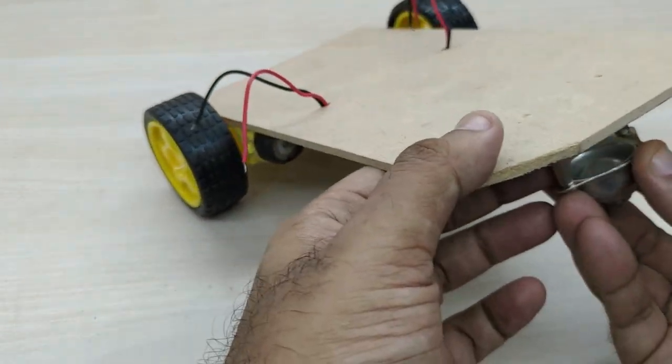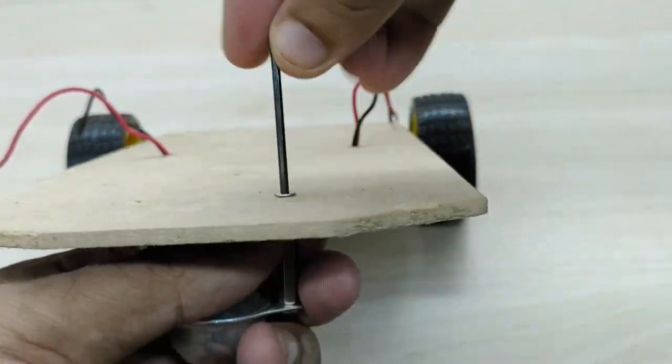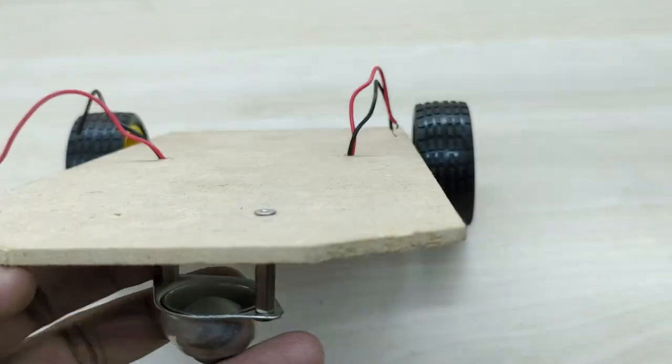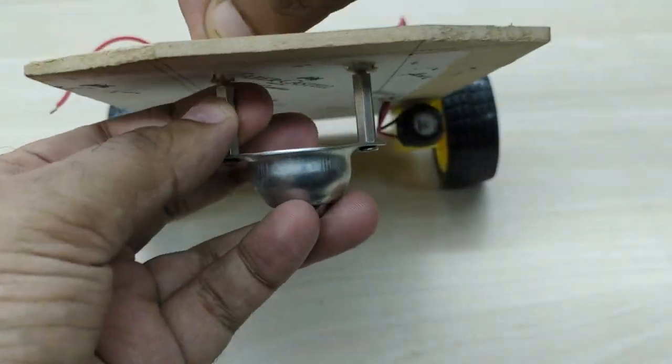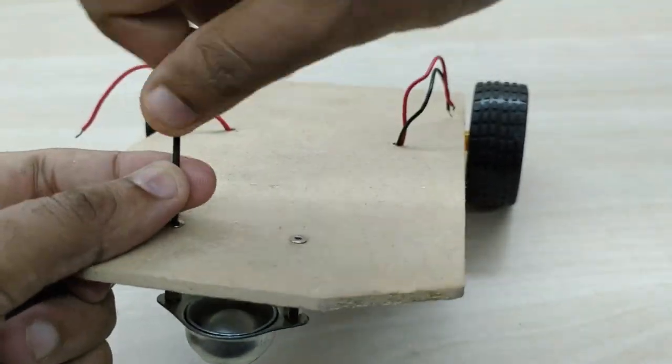Now, we have to fix the caster wheel at the front. Providing a caster wheel at the front helps the robot to quickly change direction, since it has a ball that can roll in any direction.